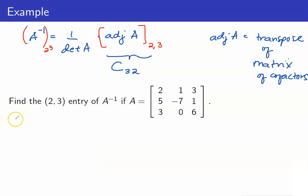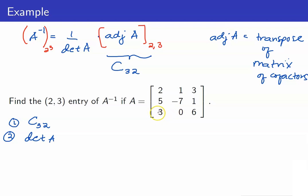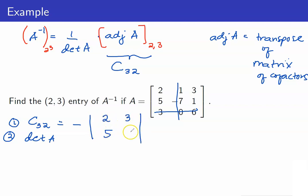Therefore, the things we need to compute are: first, C_3-2, and second, the determinant of A. To compute C_3-2, we delete the third row and second column. The sign for position (3,2) is odd, so it is negative of the determinant of the remaining 2×2 matrix with entries 2, 3, 5, 1. We get negative of 2 minus 15, which is negative 13. So therefore, C_3-2 is equal to 13.